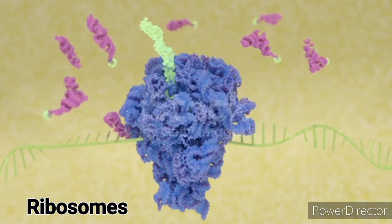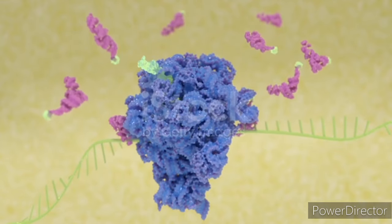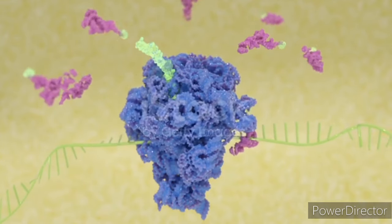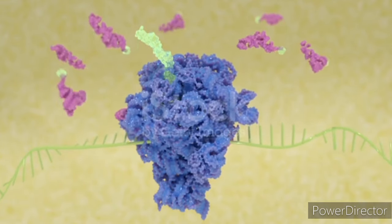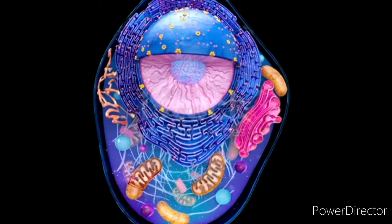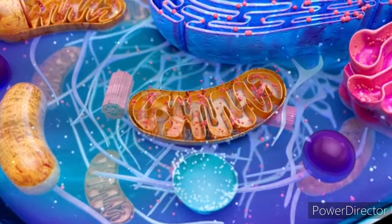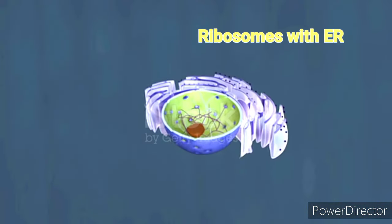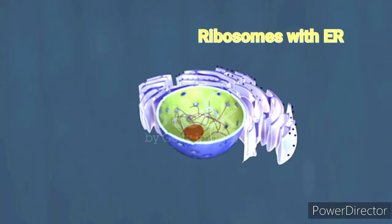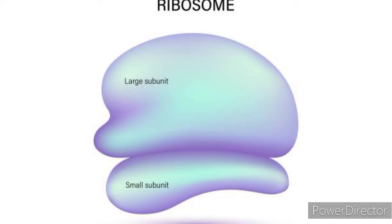Ribosomes are cellular structures responsible for protein synthesis, functioning as the machinery that translates genetic instructions from RNA into proteins. These tiny organelles, found either floating freely in the cytoplasm or attached to the endoplasmic reticulum, consist of two subunits — small and large — that come together during protein synthesis.